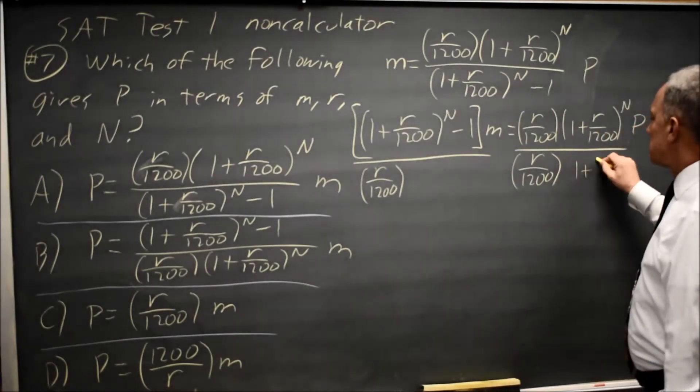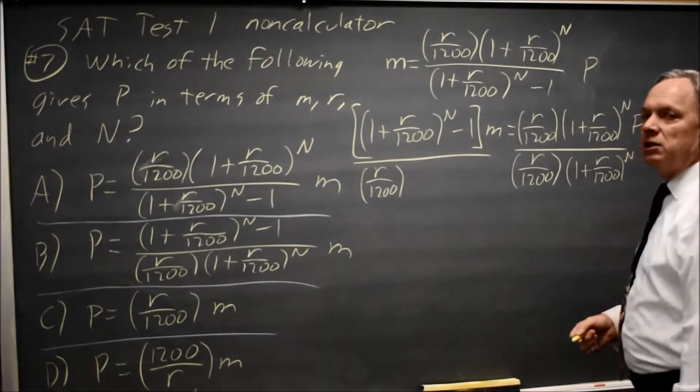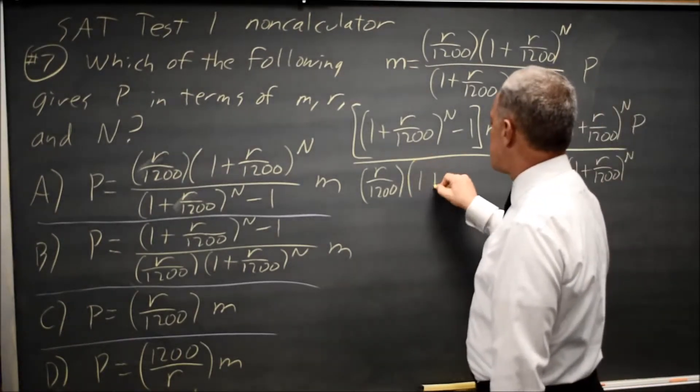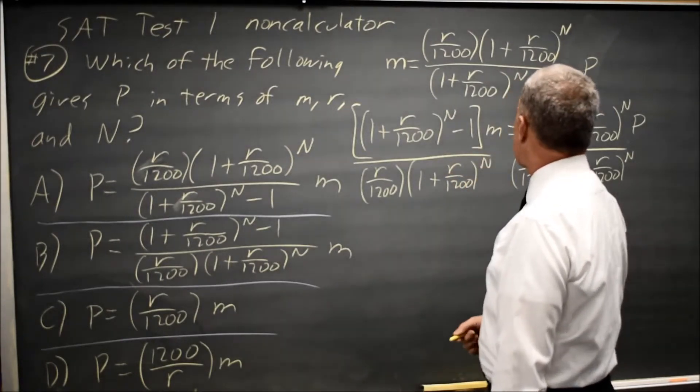And 1 plus R over 1200 to the upper case N. If I divide the right hand side by the same expression, 1 plus R over 1200 to the upper case N.